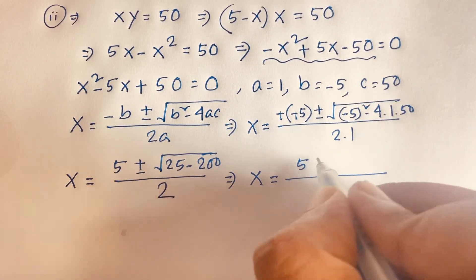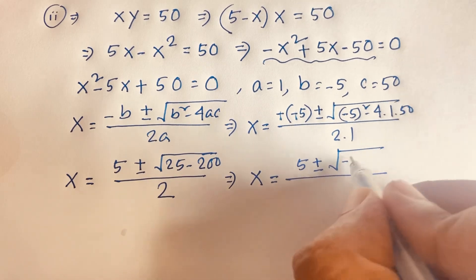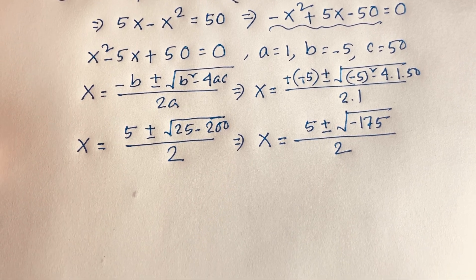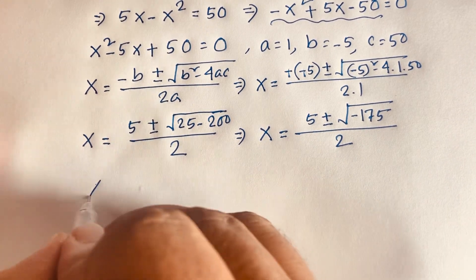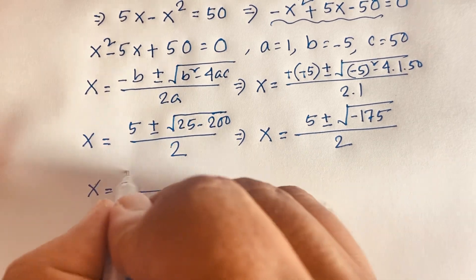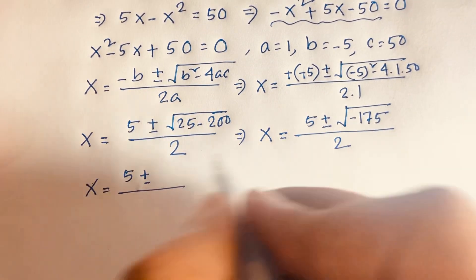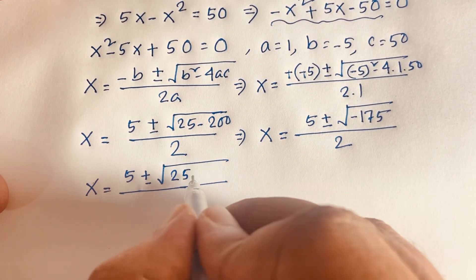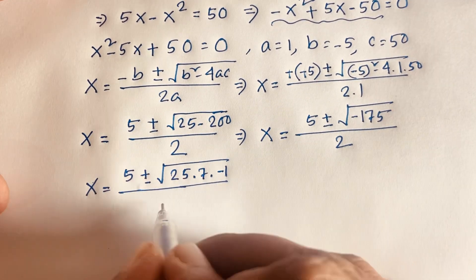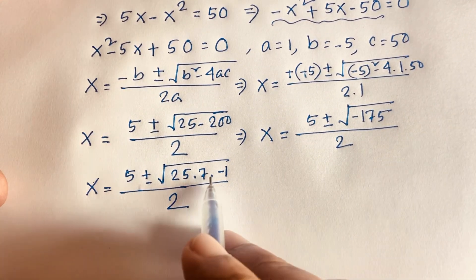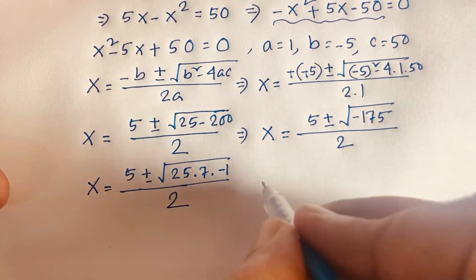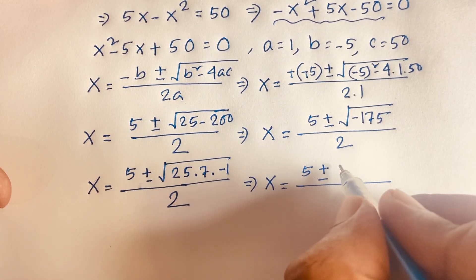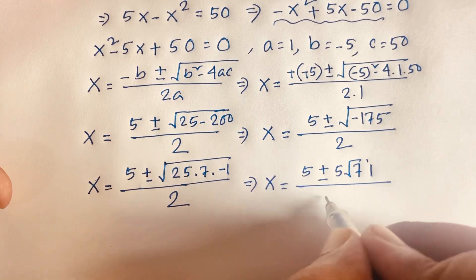So this value becomes 5 plus or minus square root of negative 175, over 2. Now 175 equals 25 times 7 times negative 1, and 25 times 7 is 175. So I can say x is equal to 5 plus or minus 5 times square root of 7i, over 2.